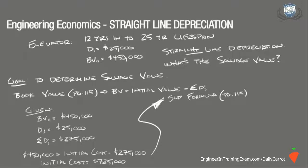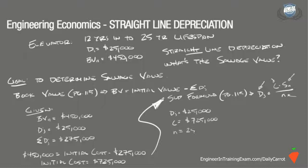We can now refer to the formula found on page 115 of the NCES Supplied Reference Handbook, which states that the depreciation charge in any year is D sub J, equal to C minus S sub N divided by N, where D sub J is the depreciation in year J, C is the cost of the piece of equipment, S sub N is the salvage value in year N, and N is the lifespan. We now know that D sub J is $25,000, cost is $725,000, and the period is 25 years.